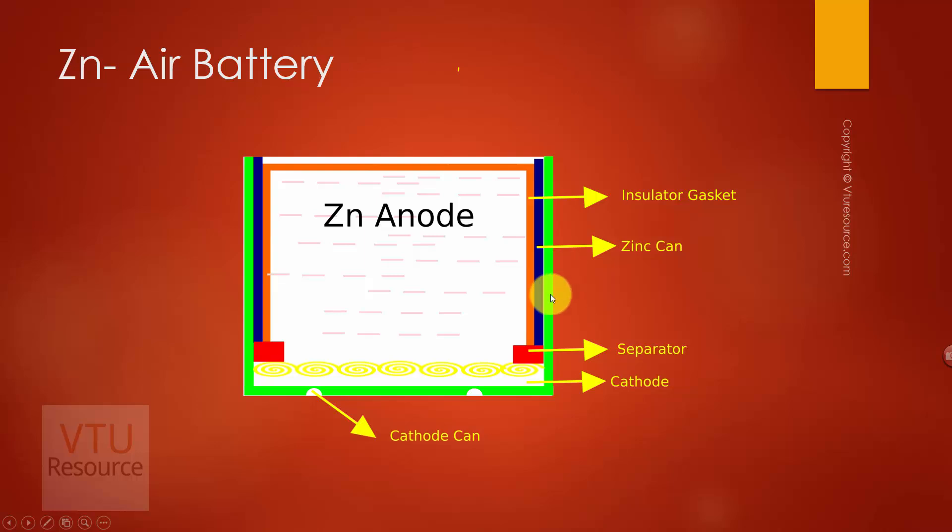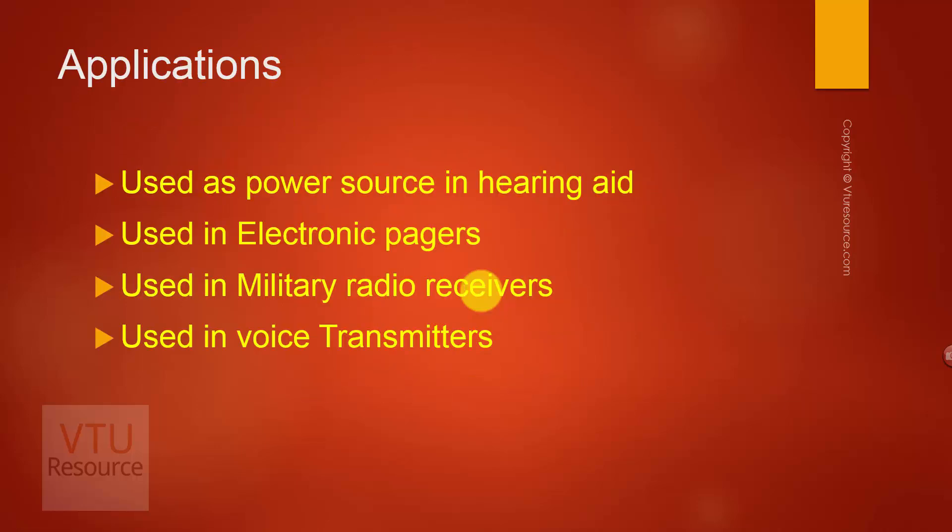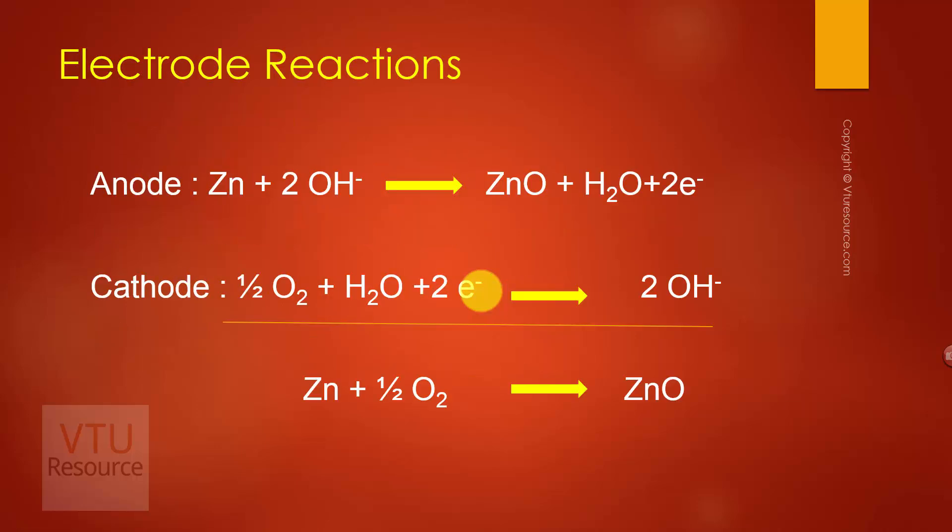So during the cell reactions in the battery, electrolyte concentration remains invariant, which we discuss later. And the air at the cathode is not consumed at the reaction site. So let us see the reactions occurring in the zinc air battery.